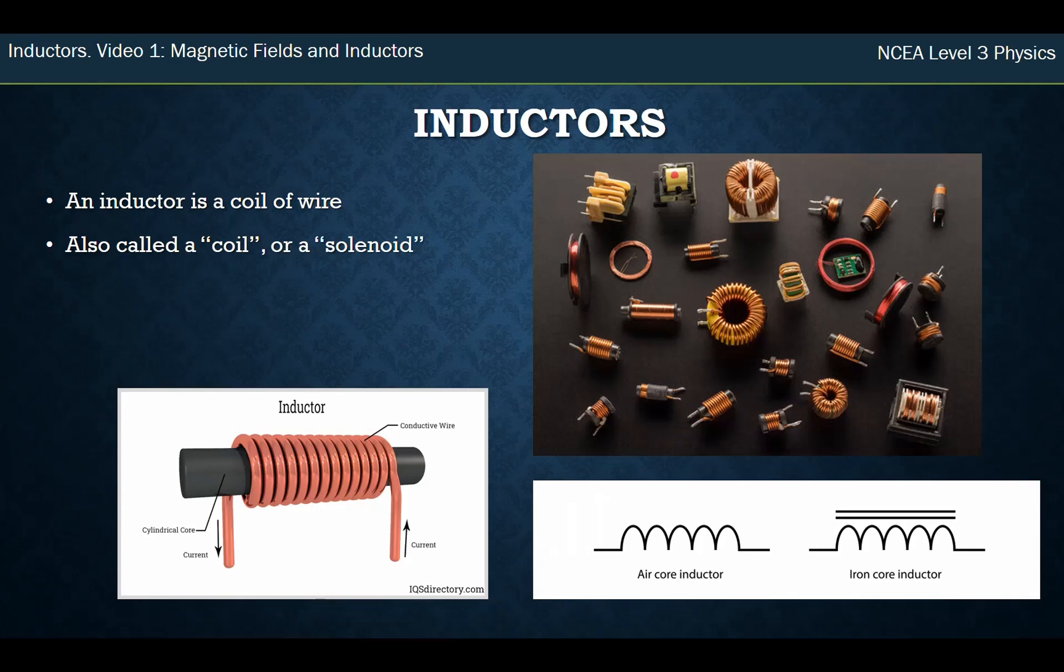You could coil it around some metal or iron, and that's an iron core inductor. So you can see the symbols down in the bottom right here. Air core is just a coil of wire with nothing in the middle of it, and when you put iron in the middle of it, you have this symbol here, which makes it a better inductor.